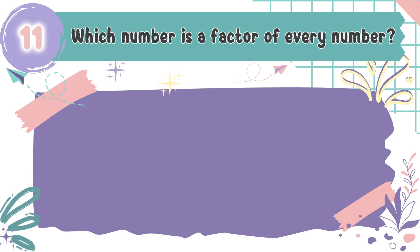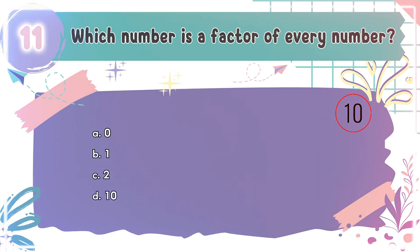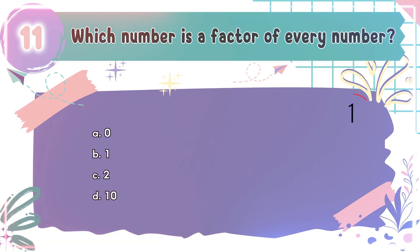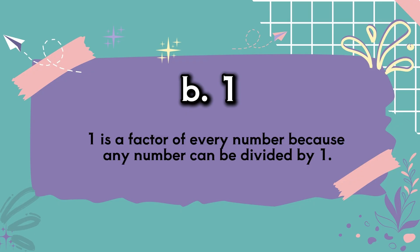Question number 11: Which number is a factor of every number? The choices are A: 0, B: 1, C: 2, D: 10. The correct answer is B, 1. One is a factor of every number because any number can be divided by 1.